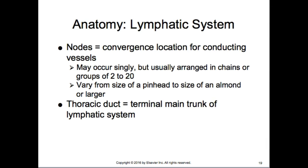Lymph nodes usually occur in tracks or groups ranging from 2 to 20, and can vary in size. When you're sick, they get really big — like the size of an almond. In your neck, behind your jaw, you can feel the lymph nodes. If you have sinus issues they'll be enlarged and a little tender if you push on them. Lymph nodes in the chest will appear larger on a chest x-ray when someone is sick or has pneumonia; normally they should be the size of a pinhead.